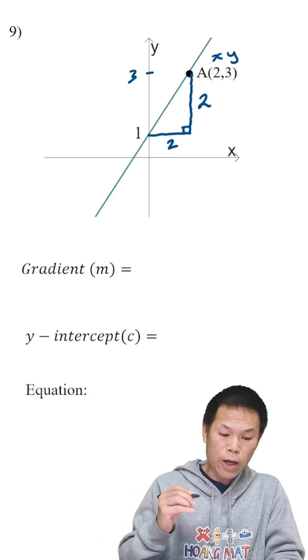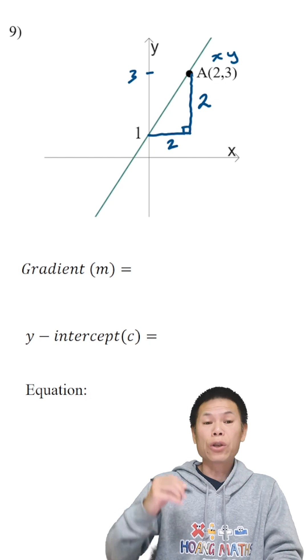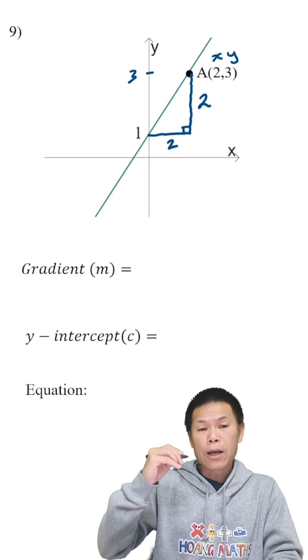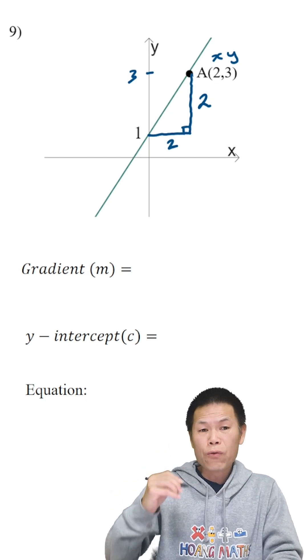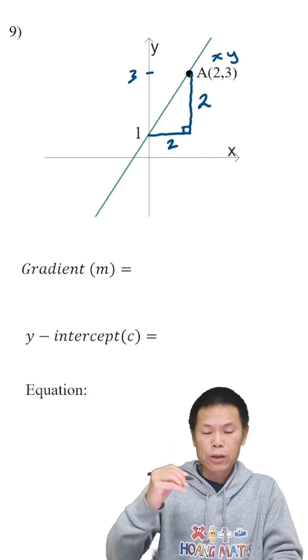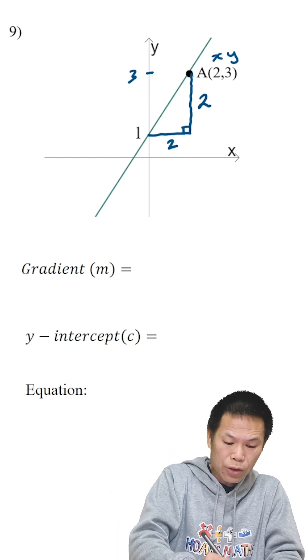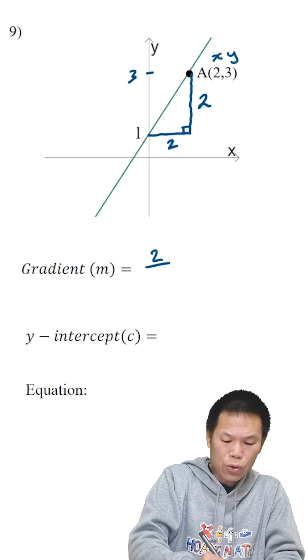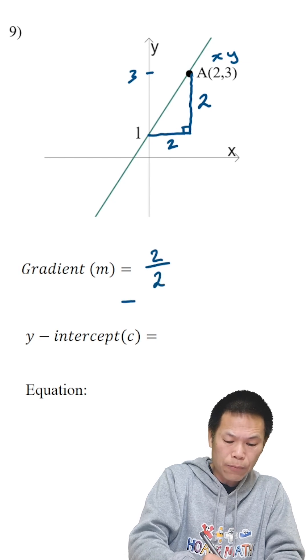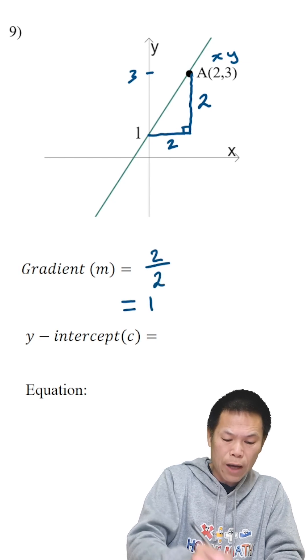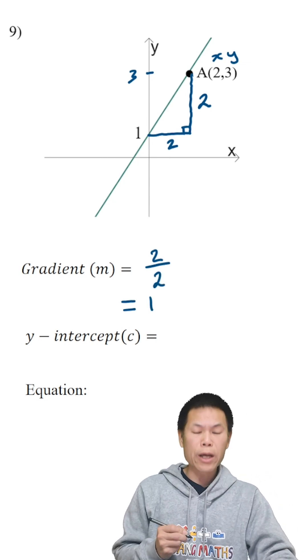So then we can work this out. The gradient is rise over run, and we know that it is positive. Rise is 2, run is also 2, so the answer is equal to 1. That's the gradient.